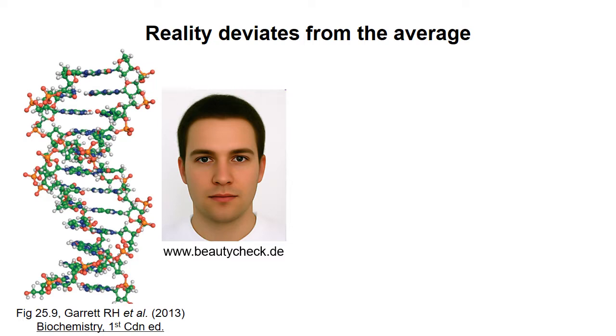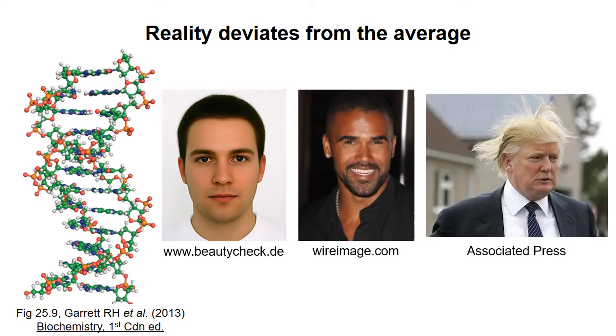Actual male faces deviate from this structure. Here are two examples. These are also male faces, but because of the ways they deviate from the average, they may generate quite different impressions in the viewer. In the same way, DNA structures can deviate from the average structure, which gives each sequence its own individual character, which in turn can influence, for example, how proteins interact with that sequence.